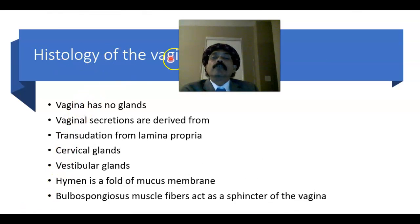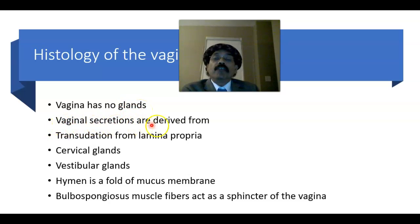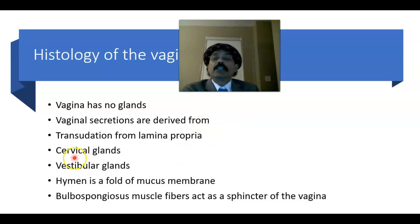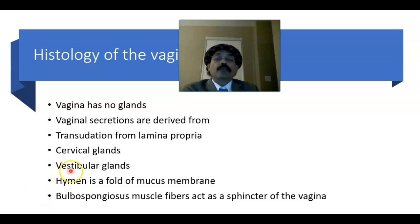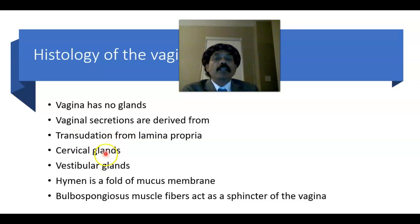The vagina has no glands. However, lubrication is derived from three sources: one is from the cervical glands, another is from transudation from the underlying tissue especially from the lamina propria, and the third source is the vestibular glands — these contribute to lubrication and maintenance of wetness inside the vagina.